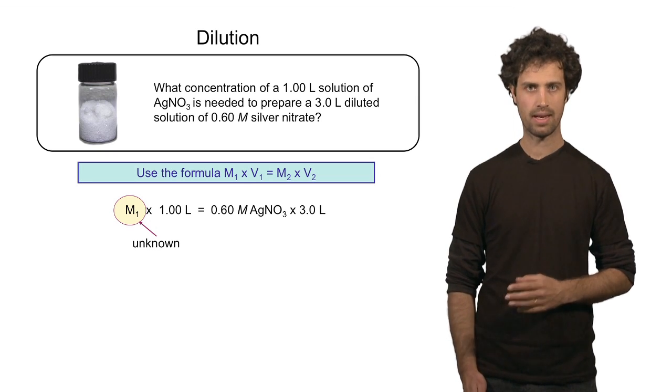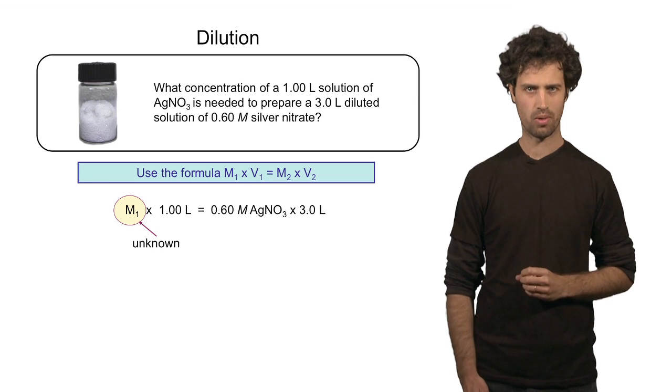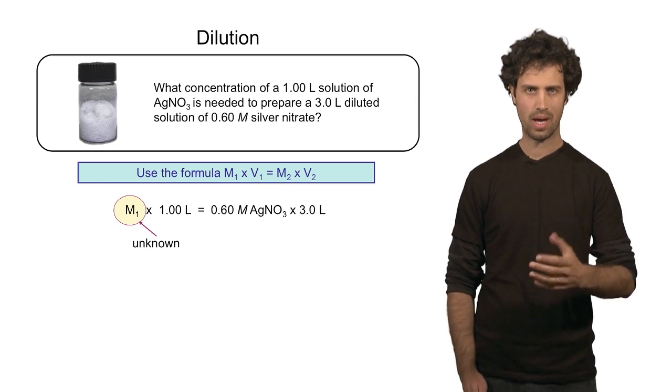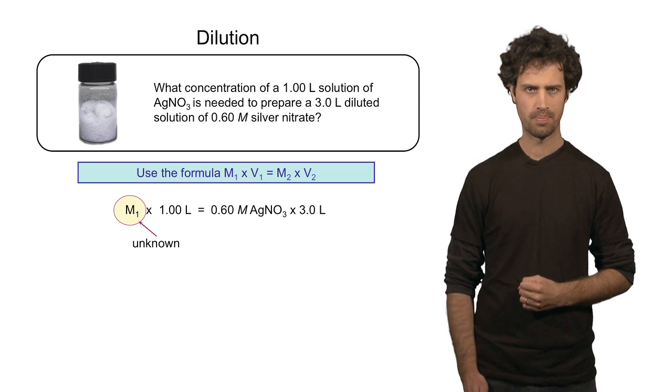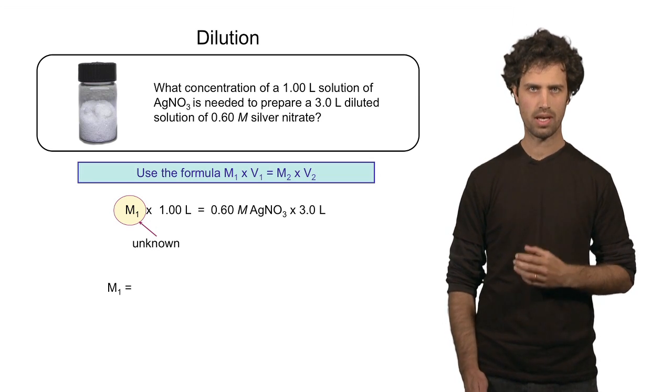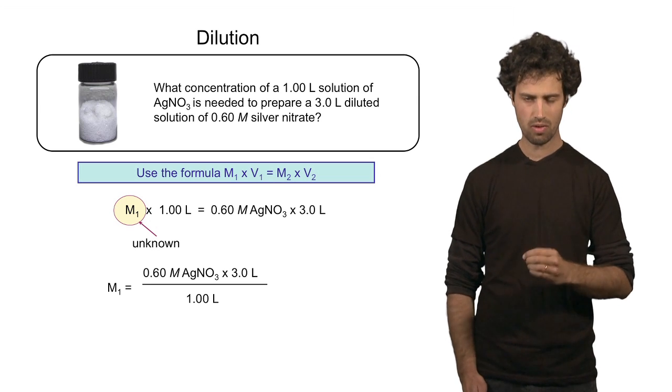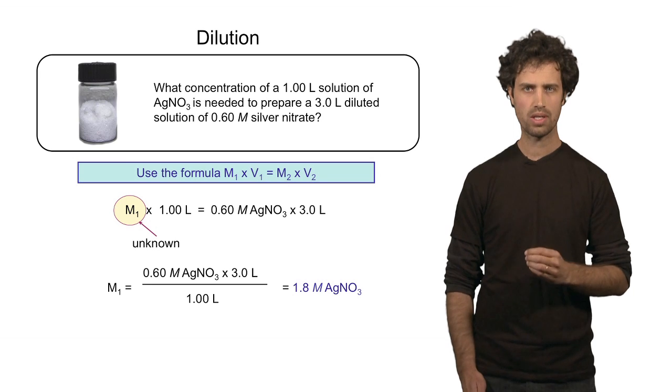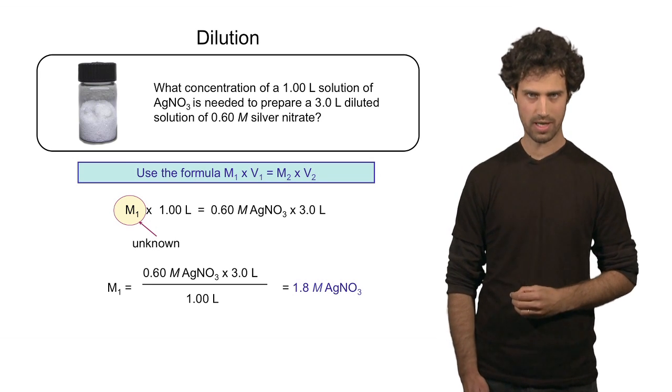The final solution needs to be 3 liters in volume and the final concentration needs to be 0.6 molar. So you will see that here again I have one unknown, the molarity M1 is the only unknown, so I can solve for this quite easily. M1 therefore is 0.6 molar times 3 liters divided by 1 liter equals 1.8 molar of silver nitrate.